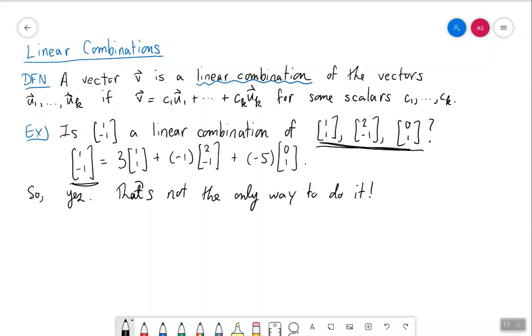In fact, and we'll see why later on, there are infinitely many ways to write 1 minus 1 as a linear combination of these three vectors.